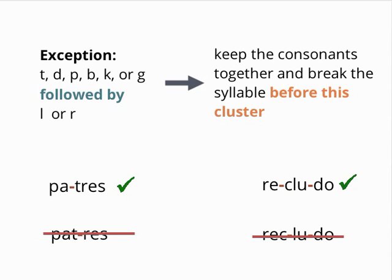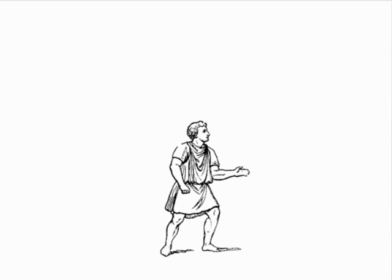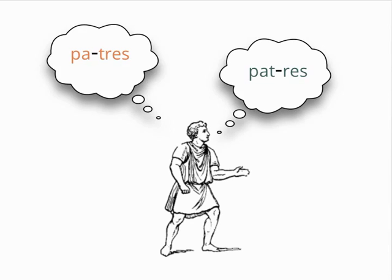Note that the cluster joins the next syllable as if it were one consonantal sound. In poetry, however, you find both divisions, generally so that the poet can maintain the integrity of the meter.